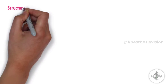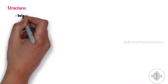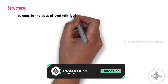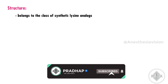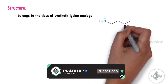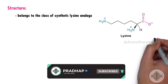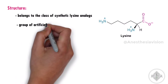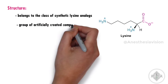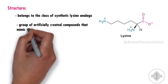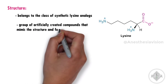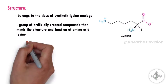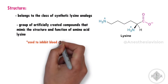Coming to its structure, tranexamic acid belongs to the class of synthetic lysine analogues — a group of artificially created compounds that mimic the structure and function of the amino acid lysine, and are used to inhibit blood clot breakdown.